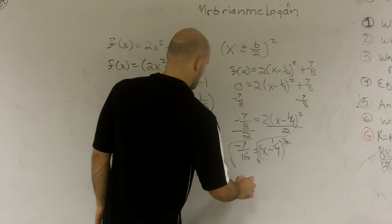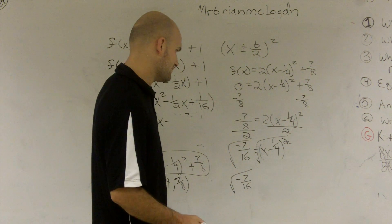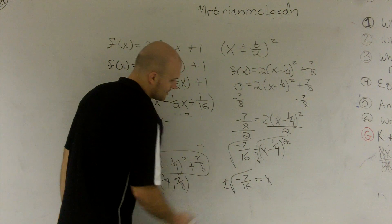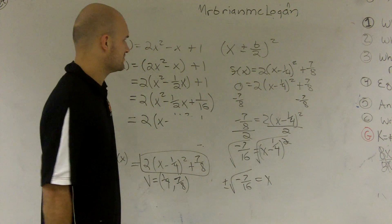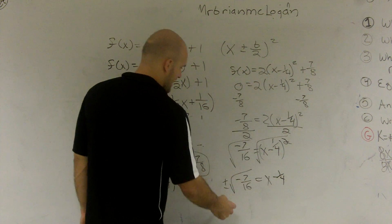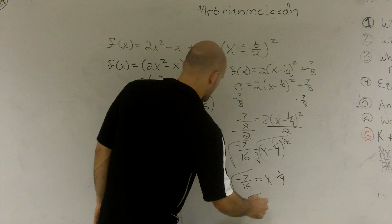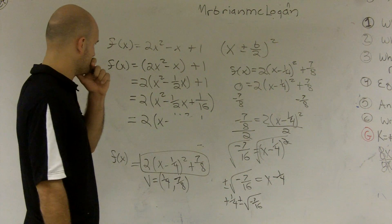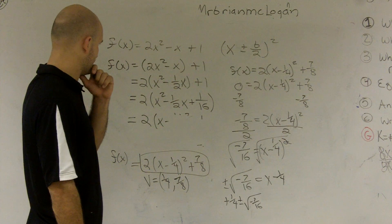And that's going to give me a negative 7 sixteenths equals x minus 1 fourth squared. Now we can take the square root of both sides. And I'm left with a square root of a negative 7 sixteenths, which isn't going to be very good, equals x. So I'm going to have some imaginary roots. Plus or minus. Obviously remember you're going to have some imaginary roots. I must have made something wrong.